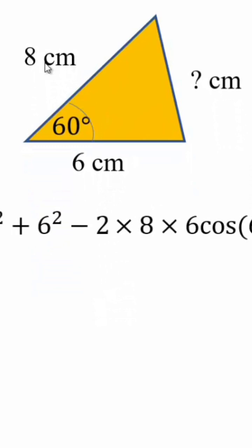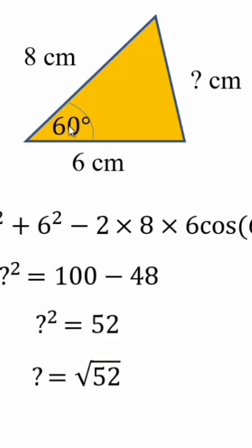times the product of this times the cosine of the angle from the previous result. That will give us 100 minus 48, which is 52, so 7.2 centimeters.